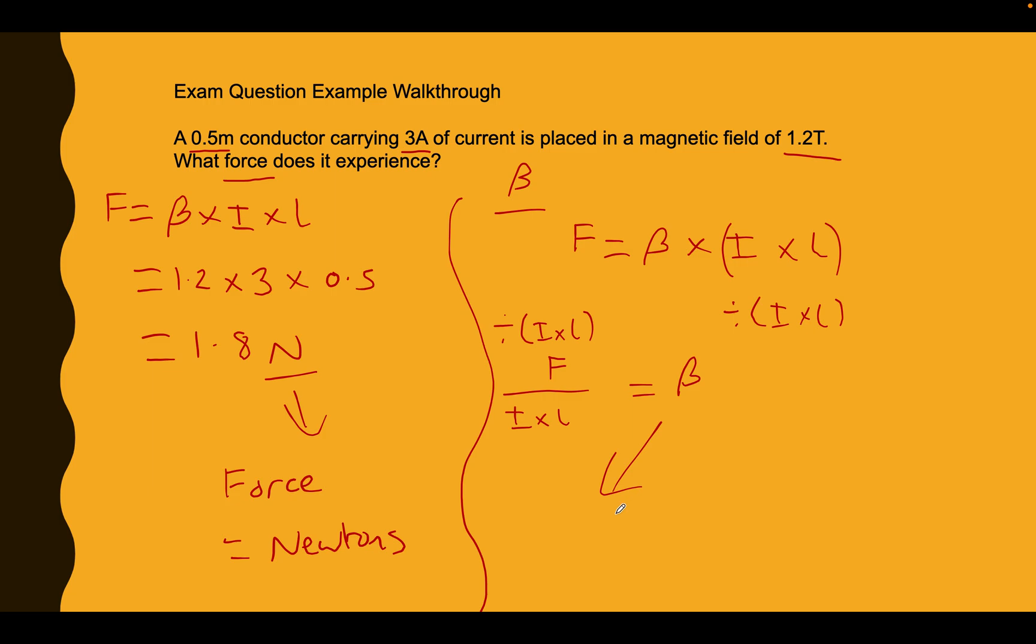Okay? So, let's flip it over so we look smart. And let's put it in like this. So, the flux density is equal to the force divided by the current flow multiplied by the length. Perfect.